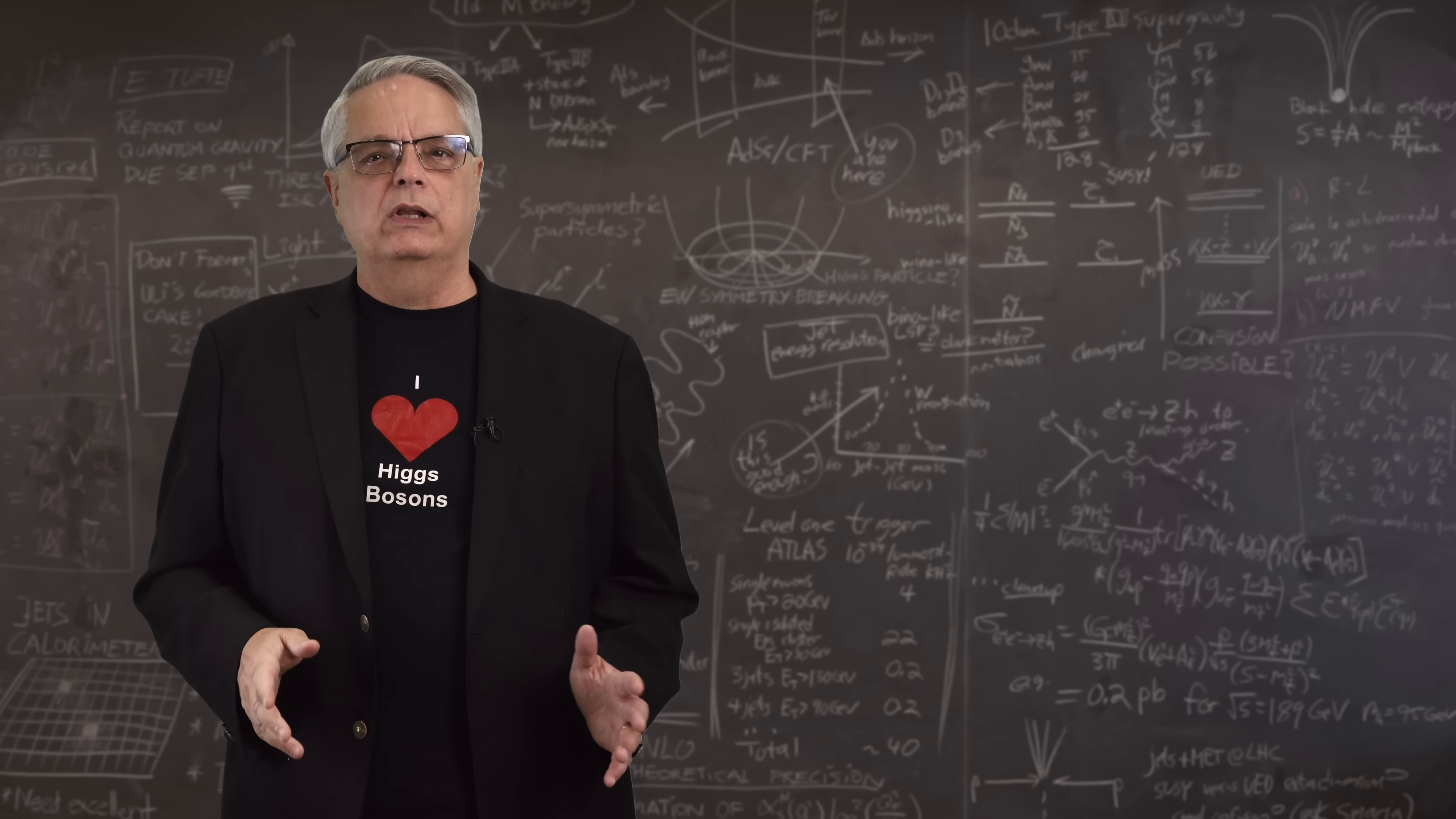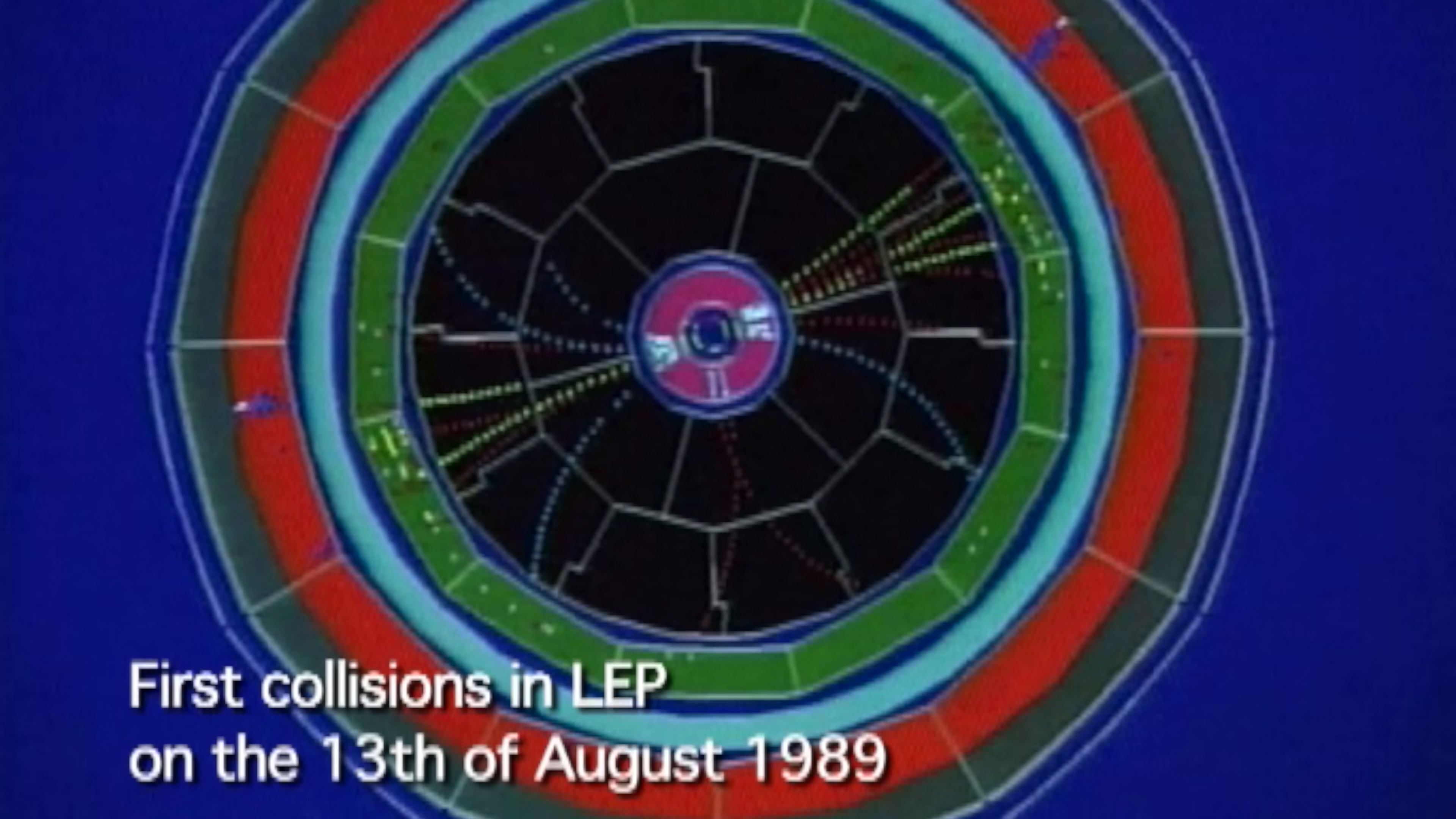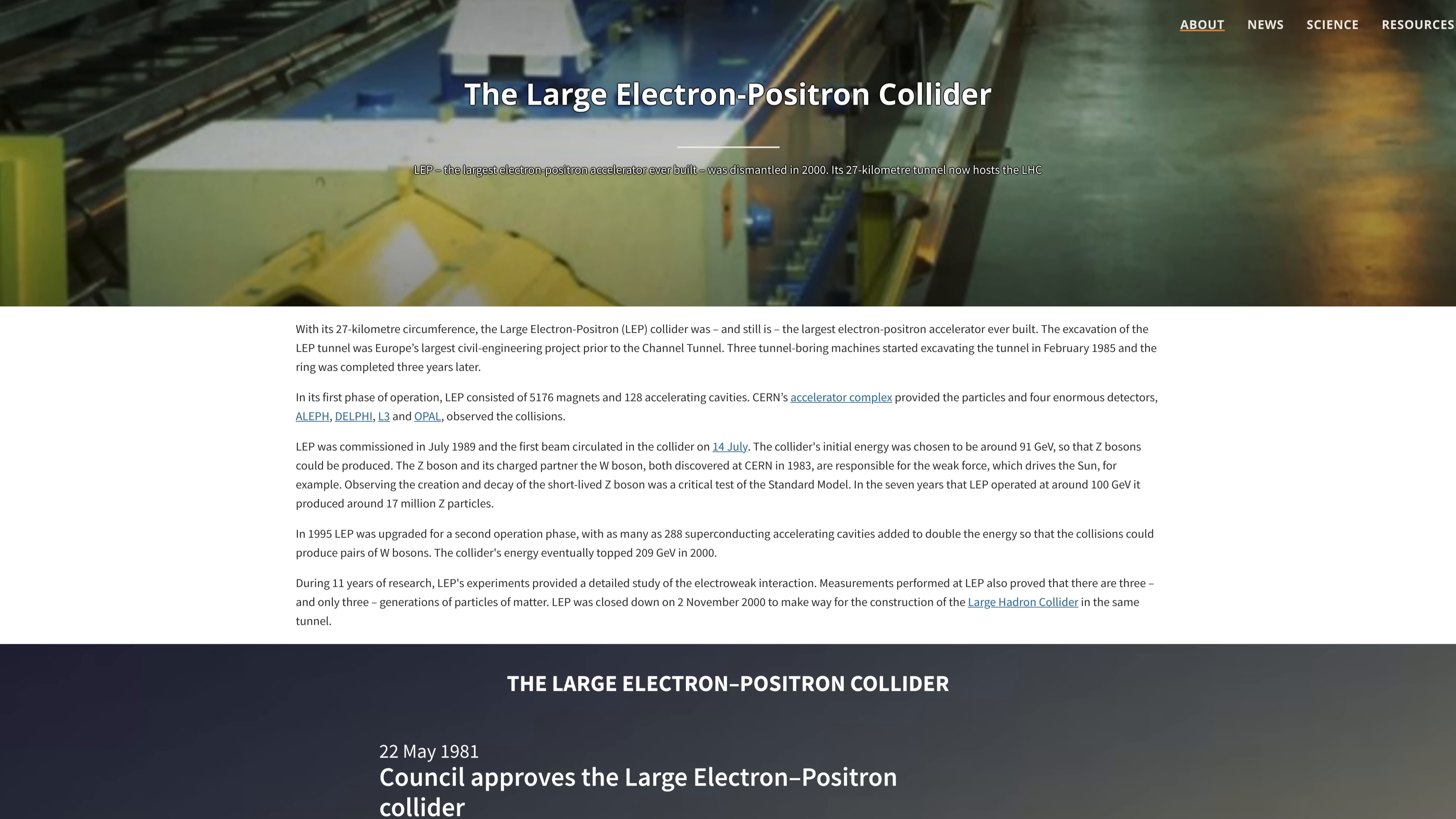The first real attempt to search for the Higgs boson was conducted using the LEP accelerator at the CERN laboratory in Europe. The LEP accelerator was around 27 kilometers in circumference, and it was designed to study the Z boson, which is one of the particles that mediate the weak nuclear force. The LEP accelerator was eventually upgraded in energy to be able to study the W boson, which is the other particle that mediates the weak nuclear force. The LEP accelerator collided electrons and antimatter electrons together, and it was a spectacularly successful accelerator. It ran from 1989 to 2000.